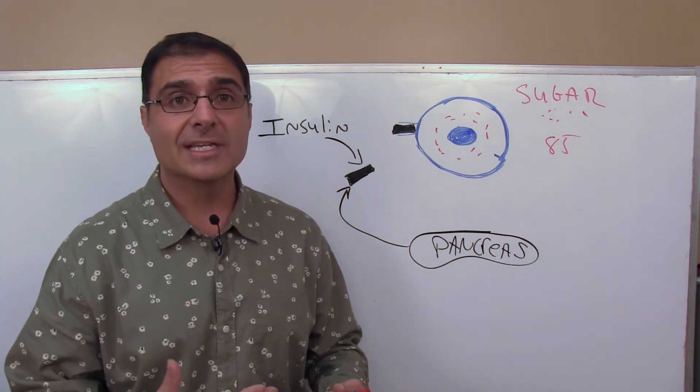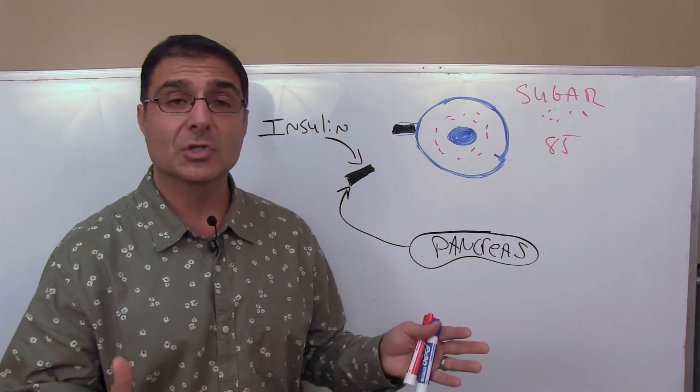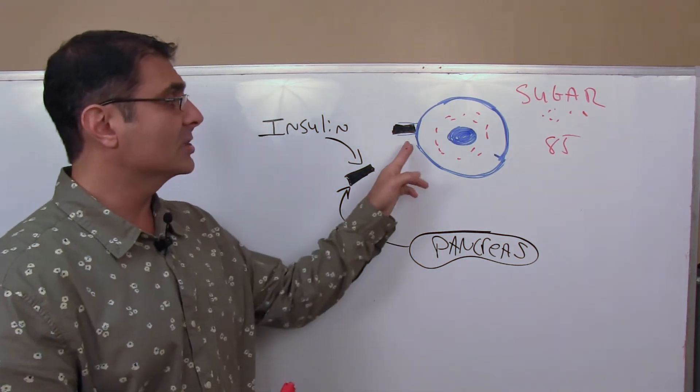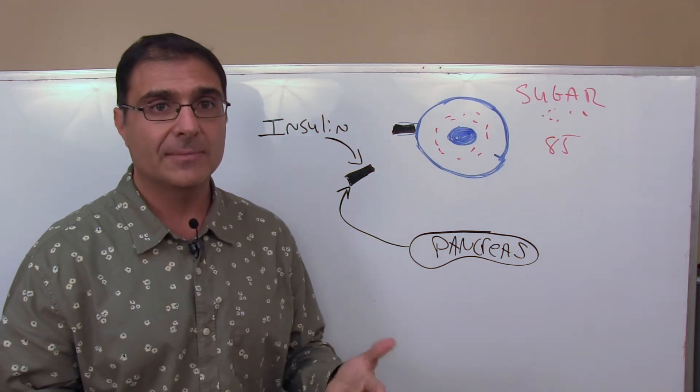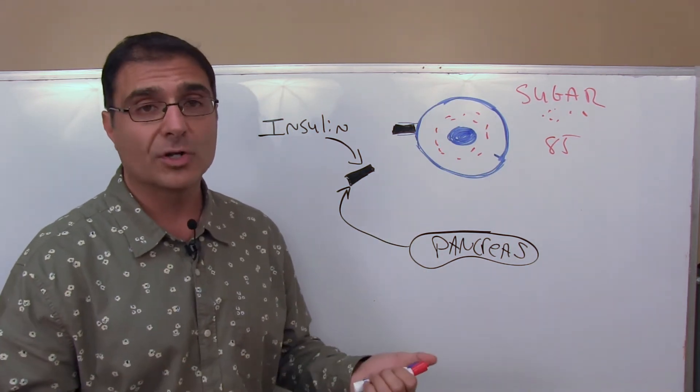They've eaten so many carbohydrates and so many refined foods for such a long period of time that these receptors, these insulin receptors, they lose their sensitivity. Now what does that mean? It simply means they don't work as well.